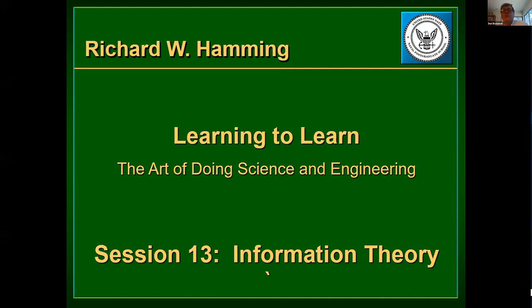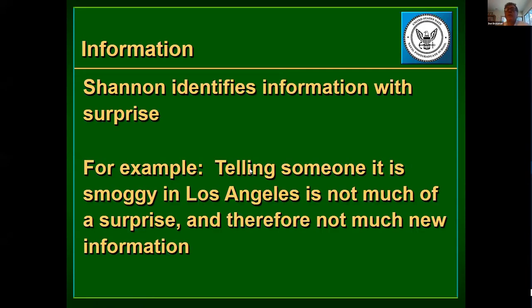Welcome, everybody. We're looking this week at Chapter 13, Information Theory by Richard Hamming. A very important topic associated with Dr. Hamming and his work. Hamming had a very close relationship with this topic. He worked for years at Bell Labs, and he was in close proximity to Claude Shannon. He is going through in this chapter on what are the aspects of information theory and what do they mean.